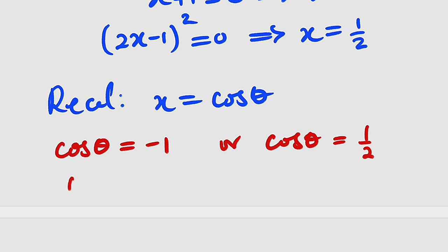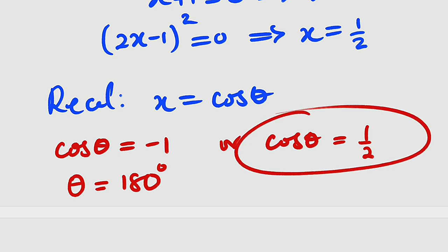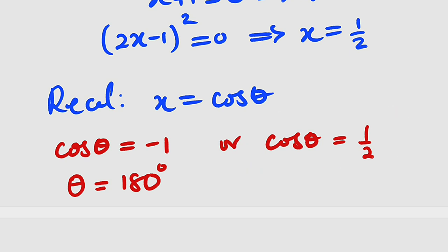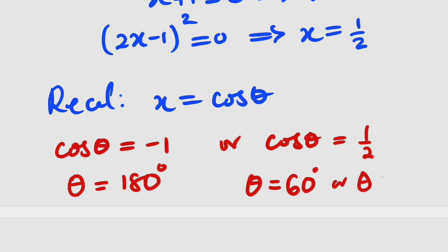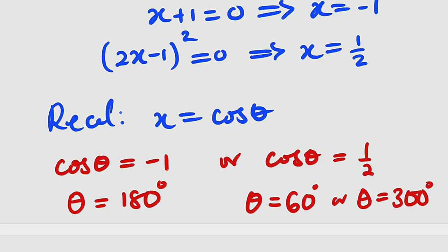So theta equals 180 degrees for the first equation. For cosine theta equals 1 over 2: cosine of 60 degrees is 1 over 2, and likewise cosine of 300 degrees is 1 over 2. So theta equals 60 degrees or 300 degrees. We have three solutions so far.